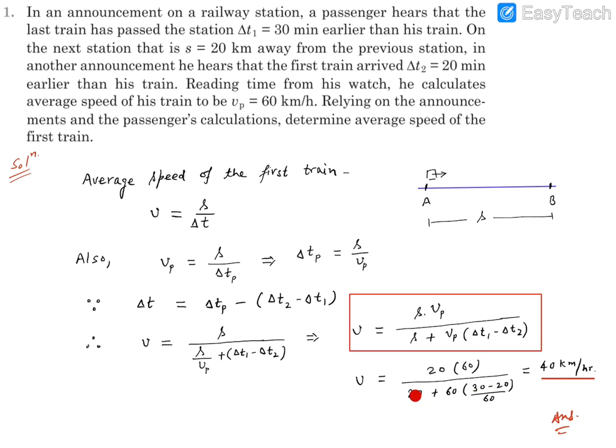This will become 10, 10 plus 20, that's 30. 30 is dividing this like 2, then 2 into 20, 40 km per hour. So this 40 km per hour is the numerical answer, and this is the expression for the average speed of the first train.